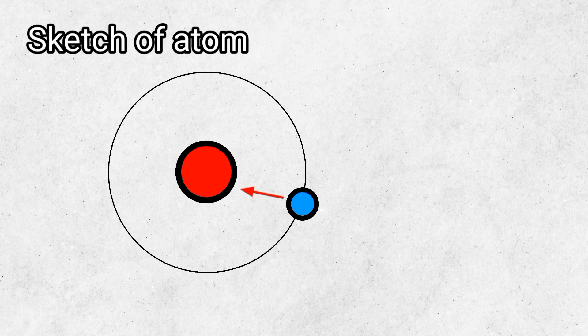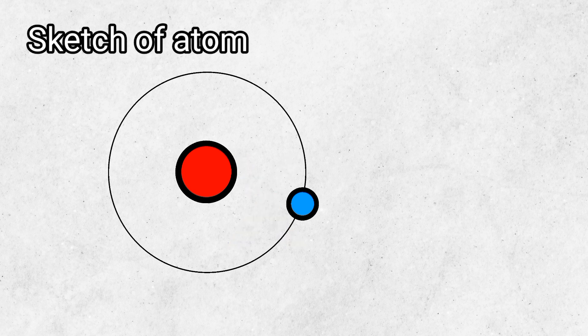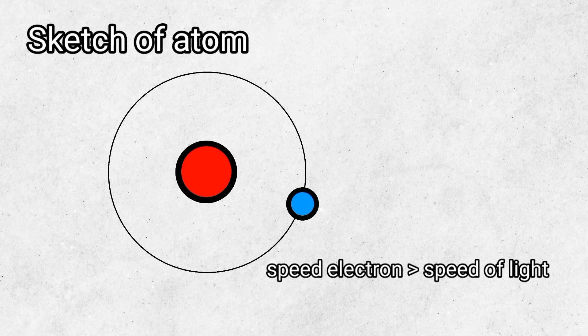Using this rule, we can see that the electron of an atom can't exist inside the nucleus, else it would be faster than the speed of light.